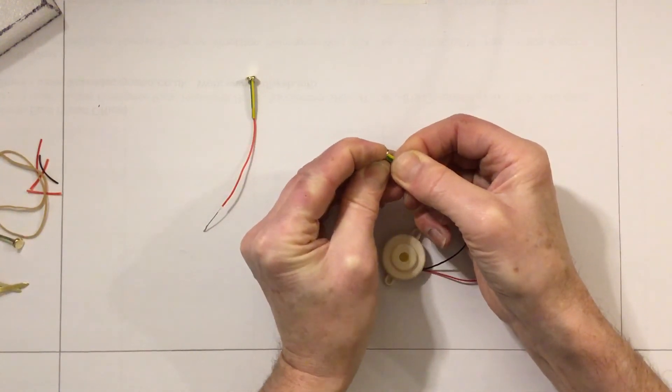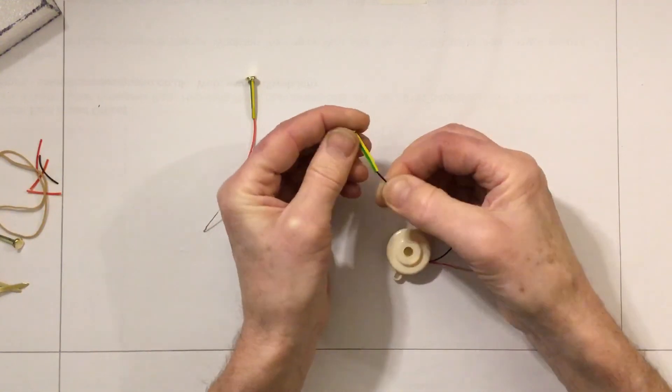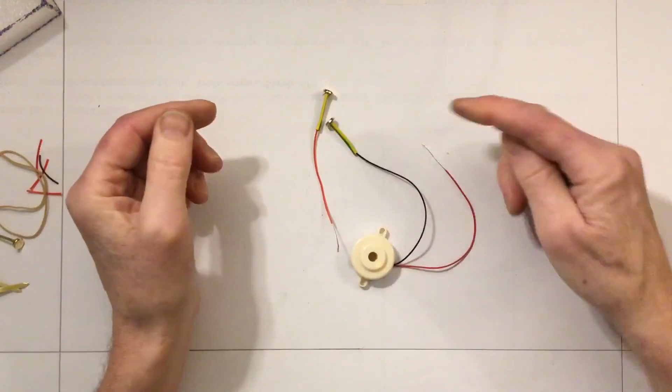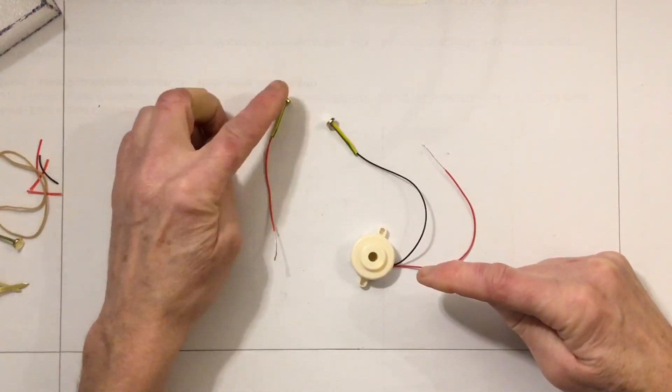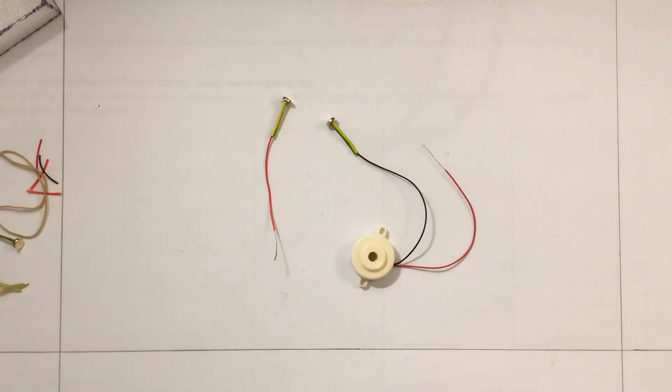And there it is, completed. That part's complete now - one fastener on the black wire from the buzzer, one fastener on one end of the single wire. In the next step, we'll start joining all of these parts together.